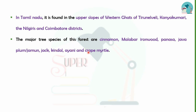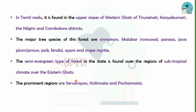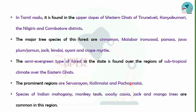There is also a semi-evergreen type of forest in Tamil Nadu. It has a subtropical climate and is found in the Eastern Ghats and other regions such as Servarayan, Kollimalai, and Pachai Malai hills.